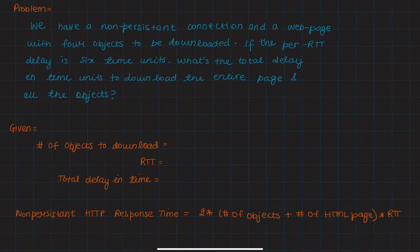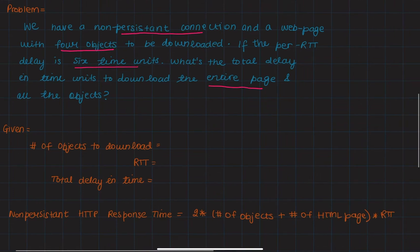Alright, so in this problem we have a non-persistent connection and a web page with four objects to be downloaded. If the per RTT delay is six time units, what's the total delay in time units to download the entire page and all the objects?